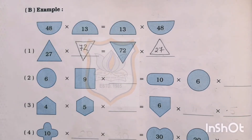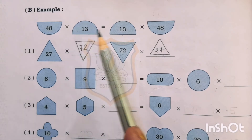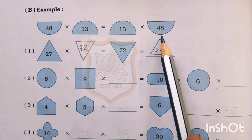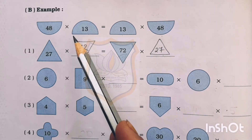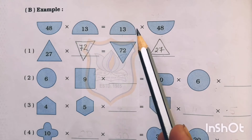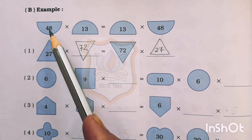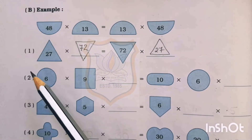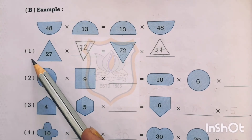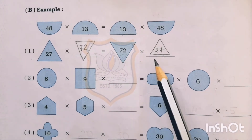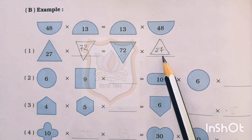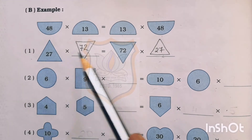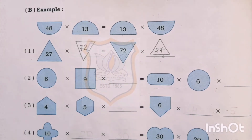Now part B of question number 12. 48 into 13 is equal to 13 into 48. In part A we had to add the numbers, and in part B we have to multiply. The numbers on both sides — left and right — are the same. Here 48 is on both sides and 13 is also on both sides. So first part of B: 27 into blank equals 72 into blank. Here 72 is missing and 27 is missing. We will write 72 and 27 accordingly. Now 27 into 72 is equal to 72 into 27. Remaining part B of question number 12 you have to do by yourself.